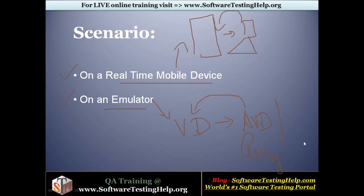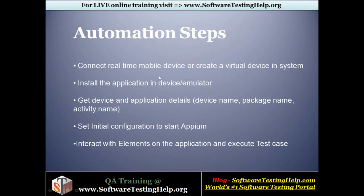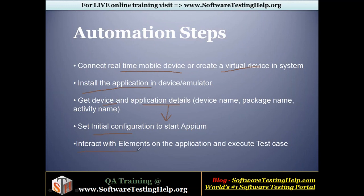Let's get started. To perform automation, these will be the basic steps: first you connect the real-time mobile device or create a virtual device, then install the application on that device, get the device name and application details to set the initial configuration for Appium, interact with the elements, and then execute the test cases.